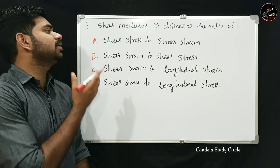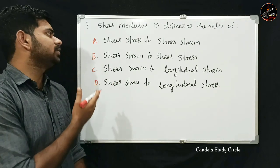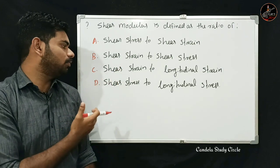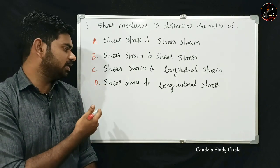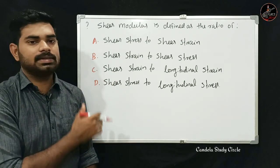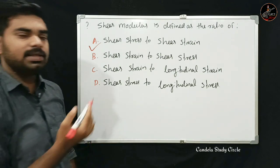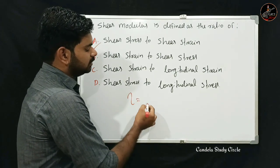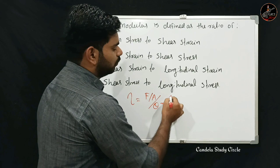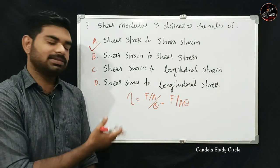Shear modulus is defined as the ratio of — which option is correct? Option A: shear stress to shear strain. Option B: shear strain to shear stress. Option C: shear strain to longitudinal strain. Option D: shear stress to longitudinal stress. Shear modulus η equals F divided by A, divided by θ — that is shear stress to shear strain. Option A is correct.